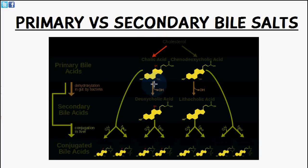And just a final note is that the secondary bile salts when they're deconjugated are more hydrophobic and toxic than the corresponding primary bile salts from which they are made.